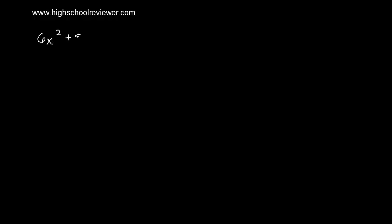Factoring general trinomials. How do we factor general trinomials? Let's have an example. We have 6x squared plus 9x minus 15.